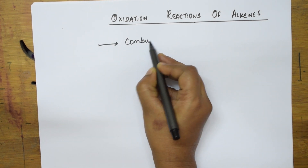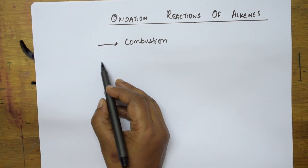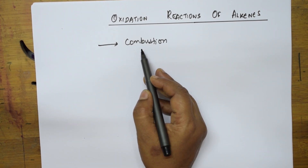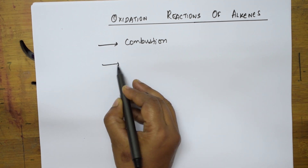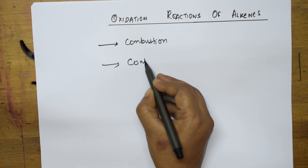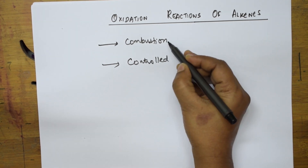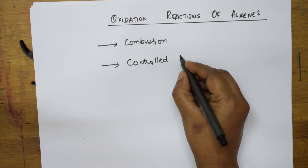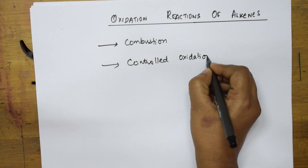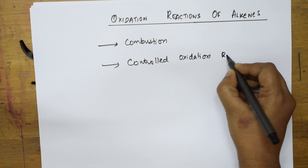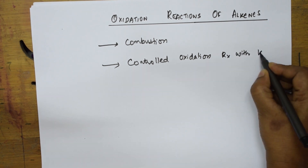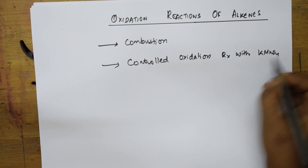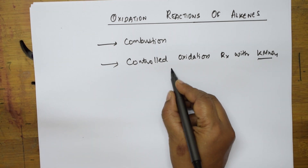We are going to study oxidation reactions under combustion reactions — combustion is nothing but burning in the presence of oxygen. The second type is controlled oxidation reactions, where combustion is without any control and directly burns off. Whenever combustion reactions occur, they form carbon dioxide and water. In controlled oxidation, we require an oxidizing agent — KMnO4 — very very important.